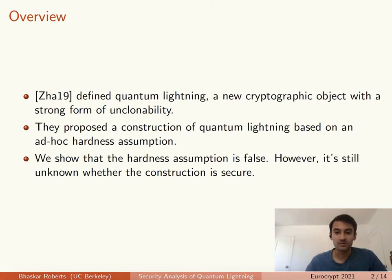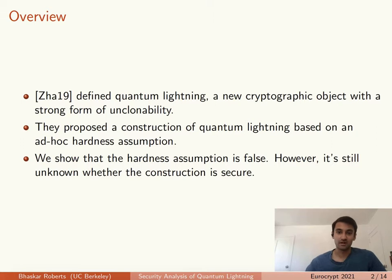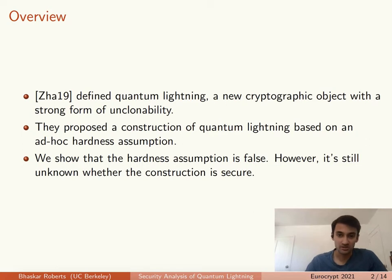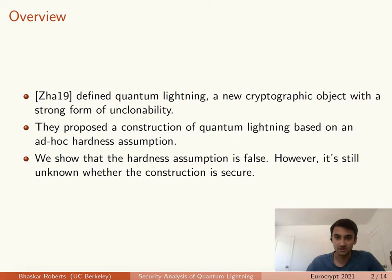A couple years ago, Zandry defined a new cryptographic object called quantum lightning, which is similar to public-key quantum money, except it provides a stronger form of unclonability. The paper made a number of contributions to this subject, but I'll just focus on one of them. They gave a concrete construction of quantum lightning and proposed a new hardness assumption that could be used to prove security.